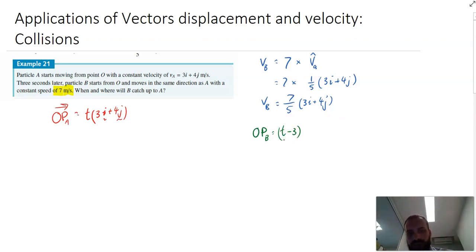And then we multiply it by this velocity vector times 7 over 5, 3i plus 4j. And then we can just tidy that up a bit. 7 bracket T minus 3 over 5 bracket 3i plus 4j.